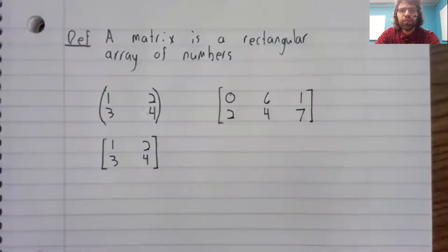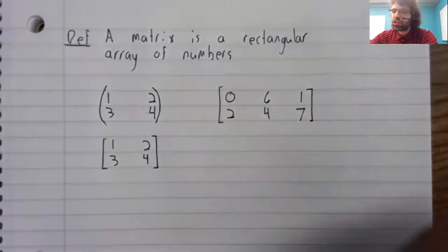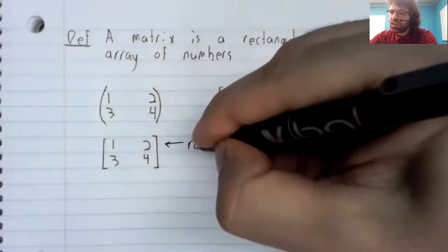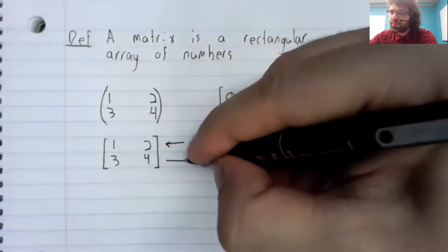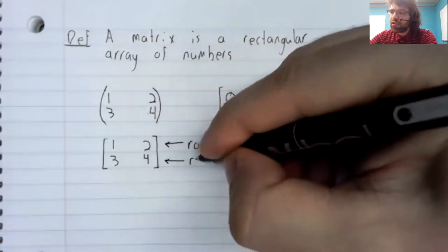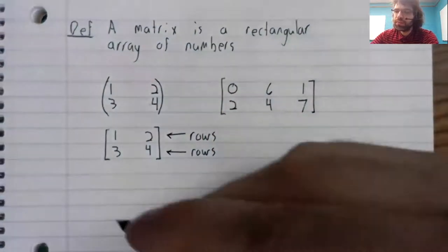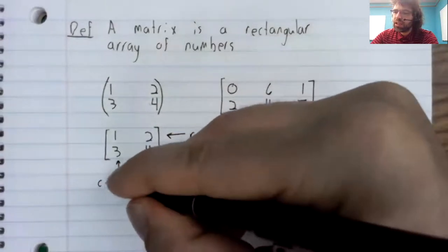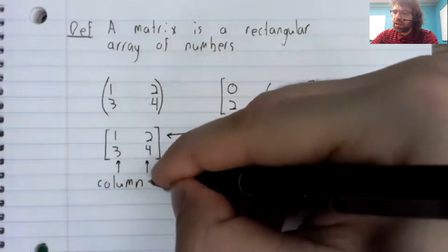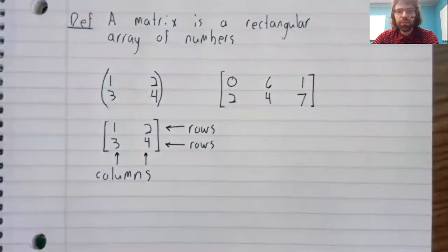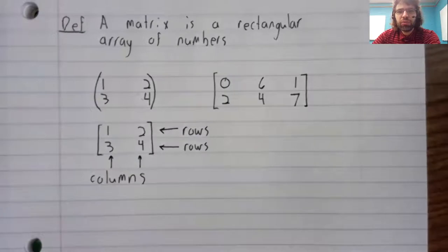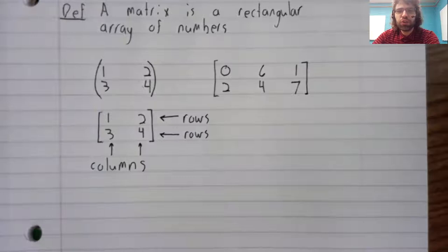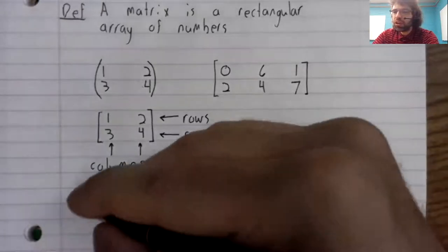A few stray definitions. Matrices have rows and columns. We can talk about how big a matrix is by counting the rows and counting the columns.